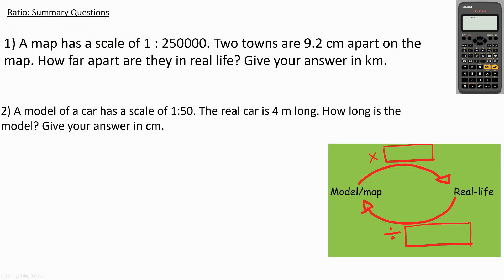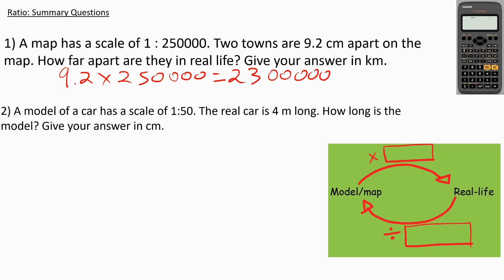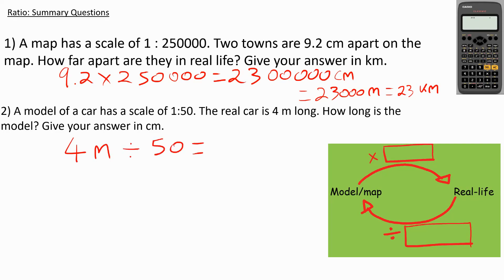Here are some questions for you to try — please pause the video and have a go at them. For the first question, 9.2 multiplied by 250,000 gives 2,300,000 centimetres; dividing by 100 gives 23,000 metres, and dividing by 1,000 gives 23 kilometres. For the second question, the model car's real length is 4 metres; dividing by 50 gives 0.08 metres, and converting to centimetres by multiplying by 100 gives 8 centimetres for the length of the model car.